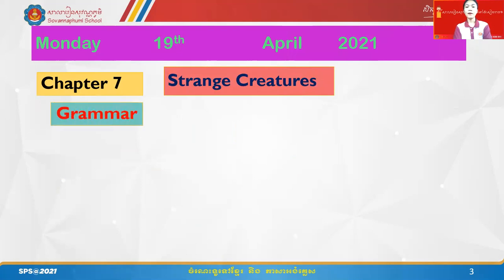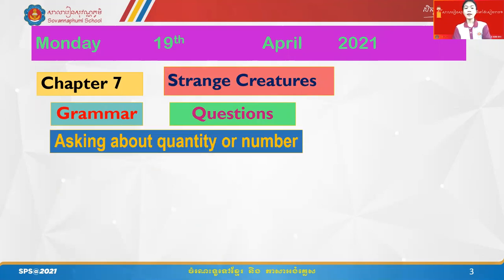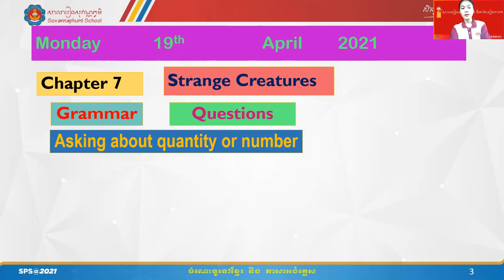From last week's grammar, you remember about asking questions — how to ask about quantity or number. If you don't remember, please go back to the previous video. For subjects he, she, and it, you use does: how many plural nouns does he/she/it have, plus a question mark.